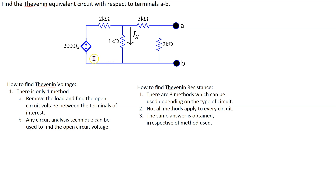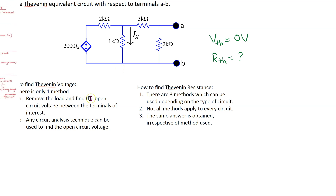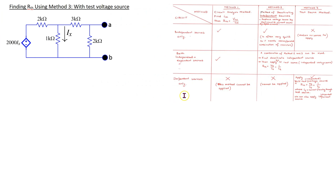When a circuit has dependent sources only, then by default V-Thevenin is equal to zero volts and the process of finding the Thevenin equivalent circuit reduces to just finding R-Thevenin. When the circuit contains dependent sources only, there is only one method that can be used to find R-Thevenin and this is the test source method.